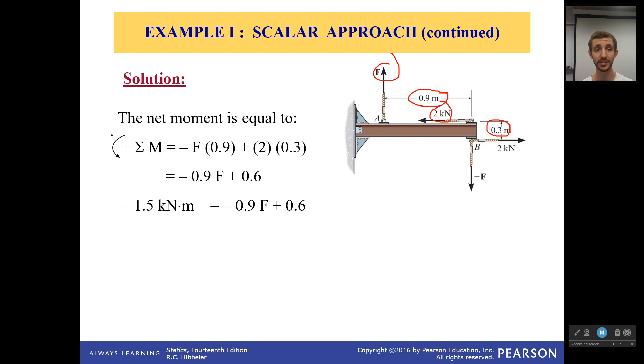So, sum of moments. In this case, I'm going to say that counterclockwise is positive, and so I have negative F times 0.9, because that is turning it clockwise, plus 2 times 0.3. That's the 2 kilonewtons, the 0.3 meters. I add all of that together.